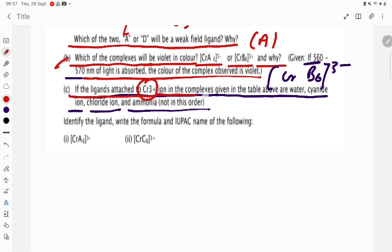See the question. What is there? If the ligands attached to Cr³⁺ ion in the complex given in the table above are water, cyanide ion (CN⁻), chloride (Cl⁻), cyanide is there, Cl⁻ is there, and NH3 is there.